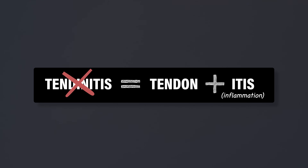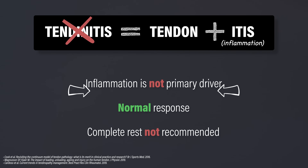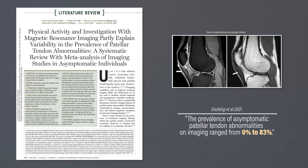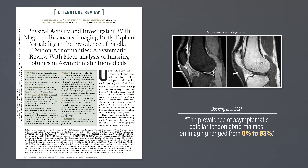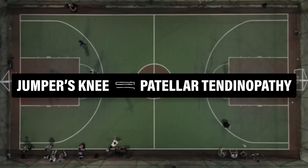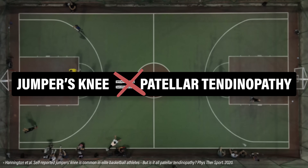Tendinitis, used to indicate an inflammatory process, is an inaccurate diagnosis. Although inflammatory markers are present, inflammation is not believed to be the primary driver of the condition and may reflect the normal response to tendon loading and adaptation. Most people associate inflammation with the need for ice and complete rest, which is not recommended for the management of patellar tendinopathy. Tendinosis, used to indicate a degenerative process, is also not the appropriate terminology. A systematic review by Docking et al. in 2021 reported that the prevalence of asymptomatic patellar tendon abnormalities on imaging ranges from 0 to 83%. If you have patellar tendinopathy, you'll have changes on imaging. However, these changes are quite common in the asymptomatic population, and imaging alone is unable to diagnose or guide treatment. Jumper's knee is also used synonymously with patellar tendinopathy because it's common in basketball and volleyball athletes, but not all pain in these individuals can be classified as patellar tendinopathy.